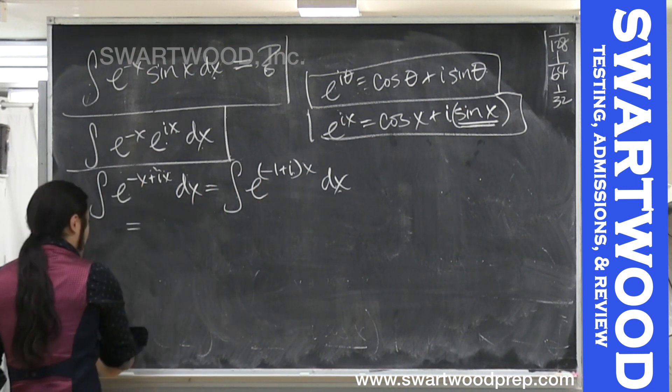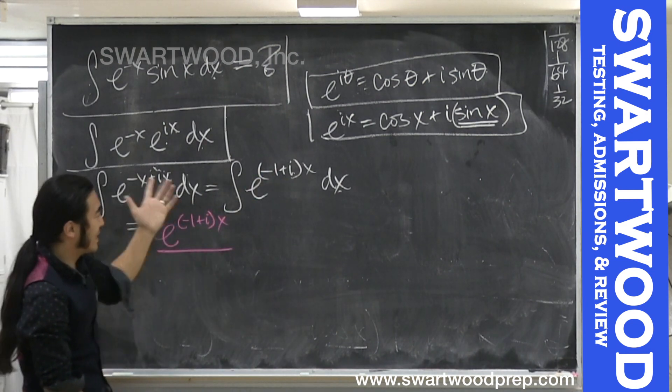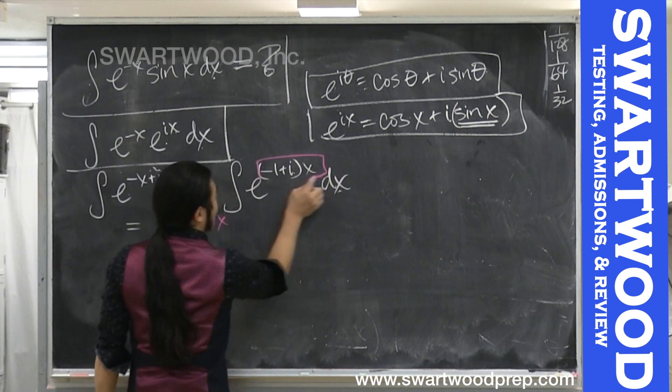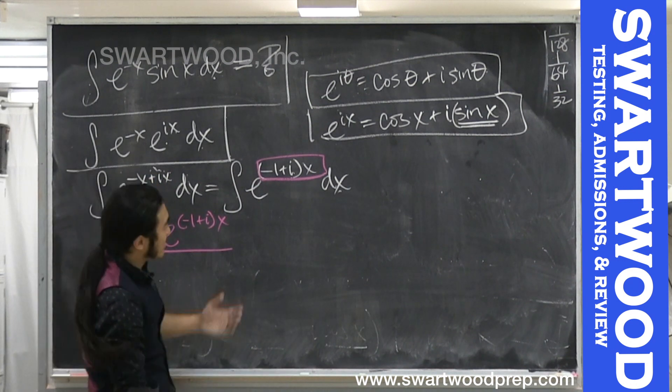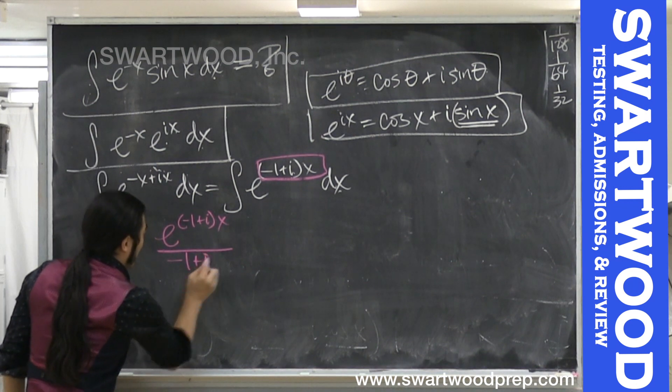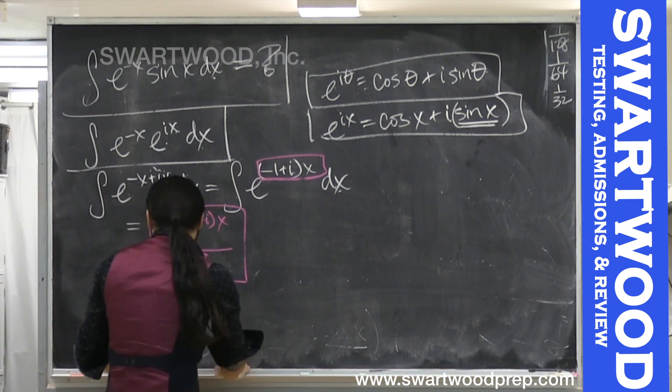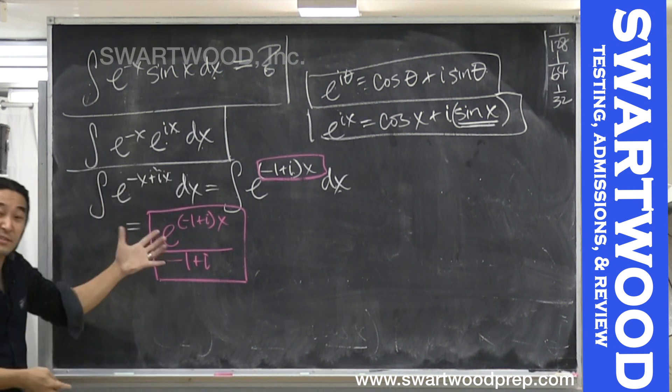If you want to integrate this guy, we'll just get something that looks like this. Integrate this exponential guy, all we're going to do is copy the guy, and then take the derivative of this thing here. So that's going to be this, negative one plus i. We're going to divide by the derivative and we're done. This is actually the answer. It's not the form that you typically recognize or see in calc books, but that is the right answer.